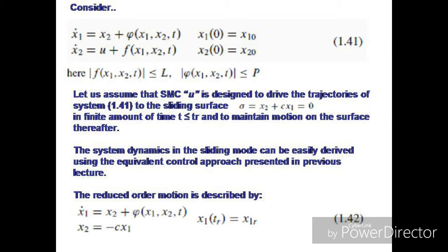This system has two disturbances. The first disturbance, phi, which is a function of state variables and time, appears in the first state equation. The second disturbance, f, which is a function of x1, x2, and time, appears in the second state equation. The control is applied in the second equation. Both disturbances are bounded: f is bounded by l and phi is bounded by p.